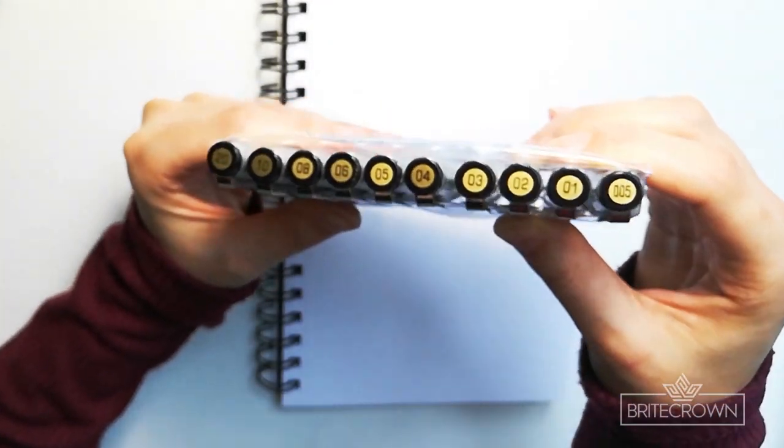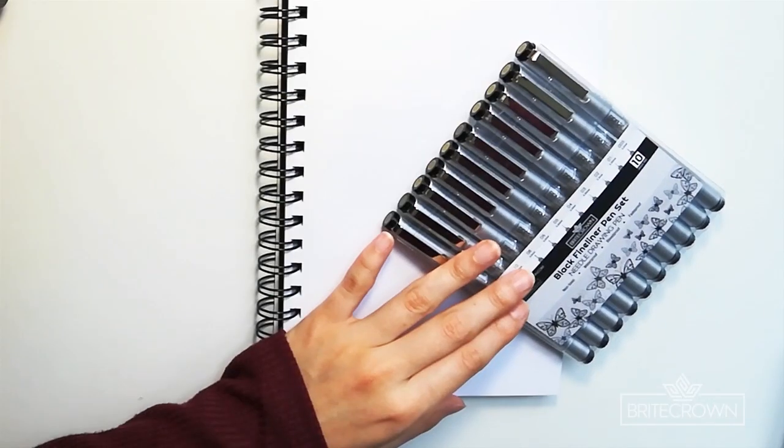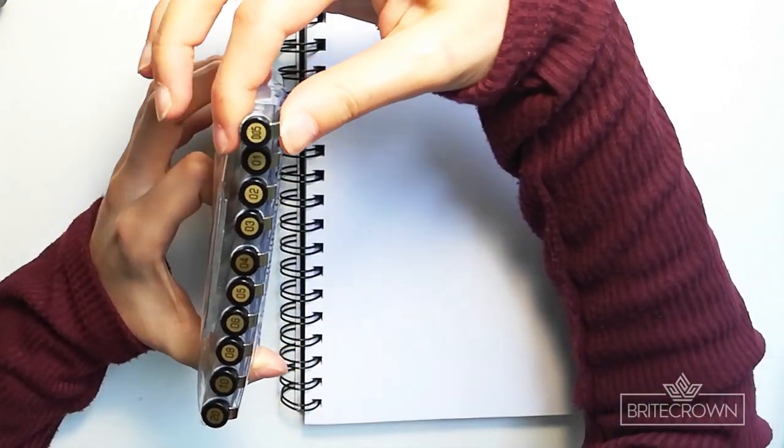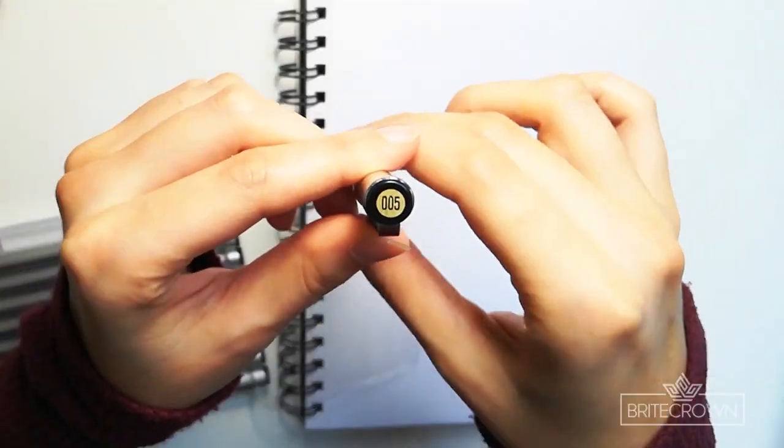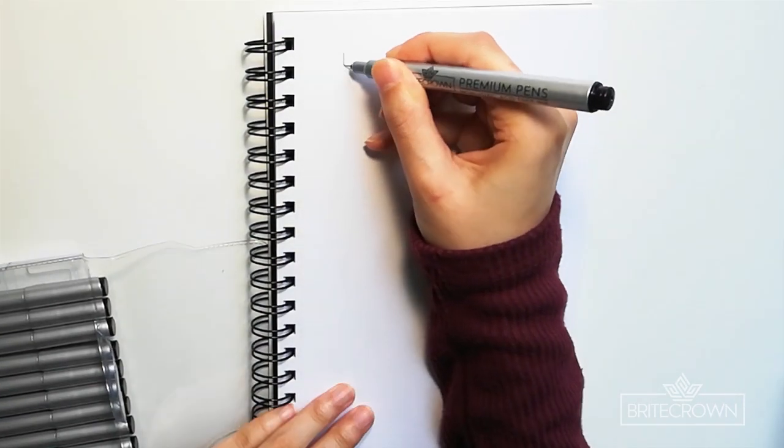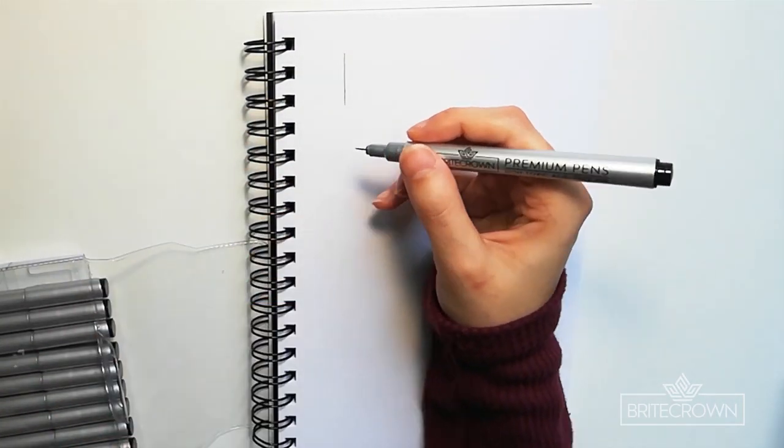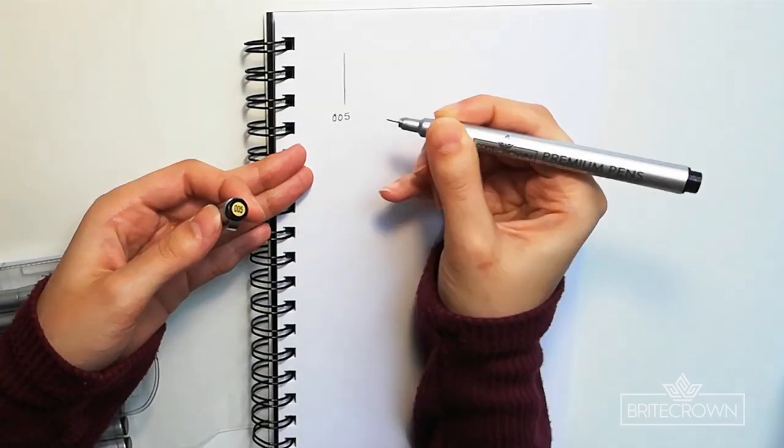So the very first size and the smallest one is 0.2 millimeter thin nib. Each cap of these pens has a label showing you the size. It's really good for details and fine work.